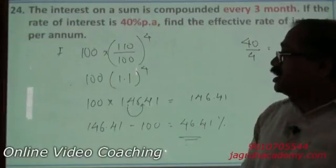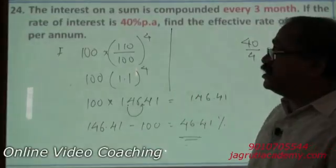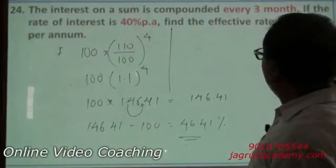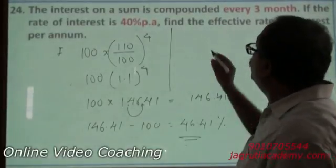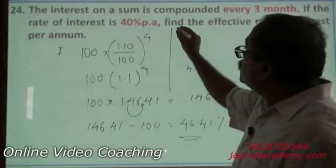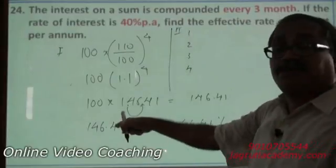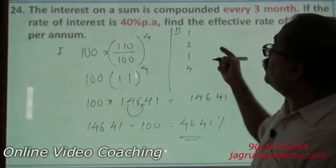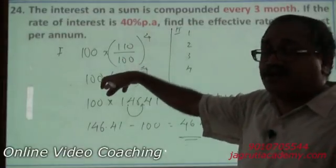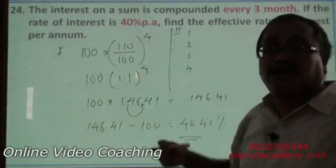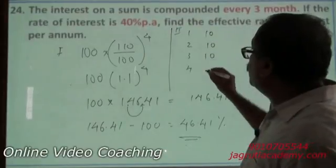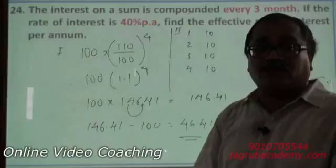The same thing can be answered in a general percentage understanding. That is, for first three months, there are four three months periods. One, two, three, and four. This is the second method. First method is this. Both are almost same effort but the approach is different. Here is a formula approach and here it is a general understanding approach about percentage. First, you are paying 10 percent on principal, again 10 percent on principal, 10 percent on principal, and here also 10 percent on principal.